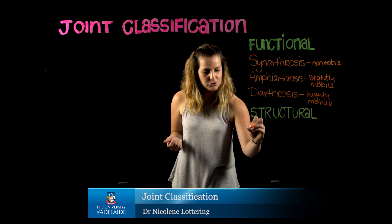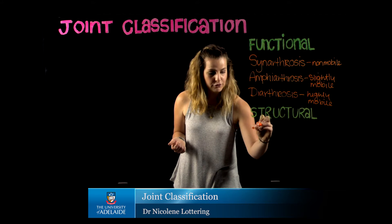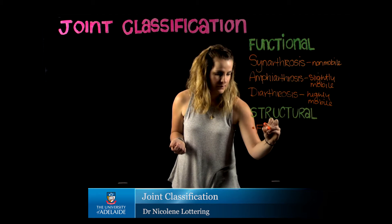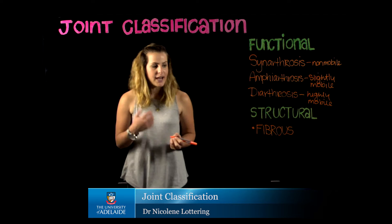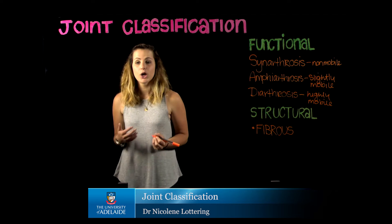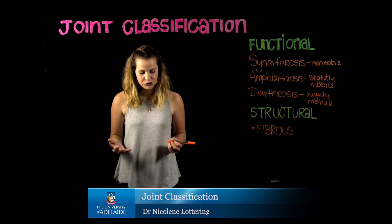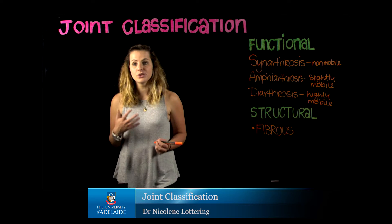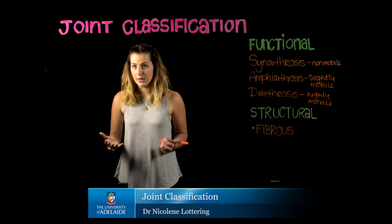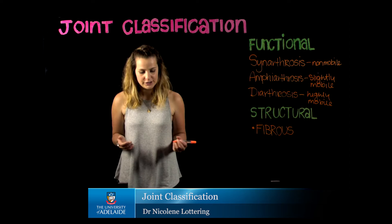The first type is going to be our fibrous joints. Our fibrous joints are going to be made up of dense connective tissue, and there are two types of specific fibrous joints that we are interested in and that we have learned.